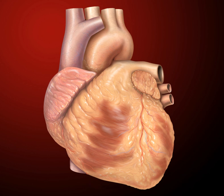In Egyptian religion, the heart was the key to the afterlife. It was conceived as surviving death in the netherworld, where it gave evidence for or against its possessor. It was thought that the heart was examined by Anubis and a variety of deities during the weighing of the heart ceremony. If the scales balanced, it meant the heart's possessor had lived a just life and could enter the afterlife. If the heart was heavier, it would be devoured by the monster Amit.